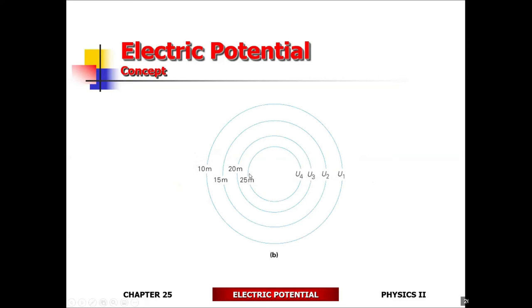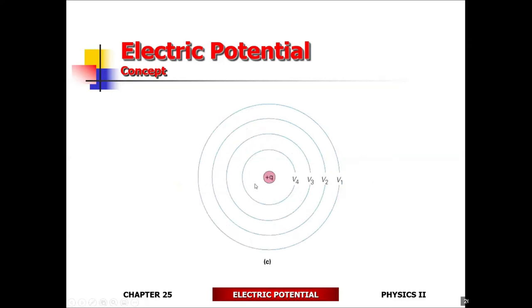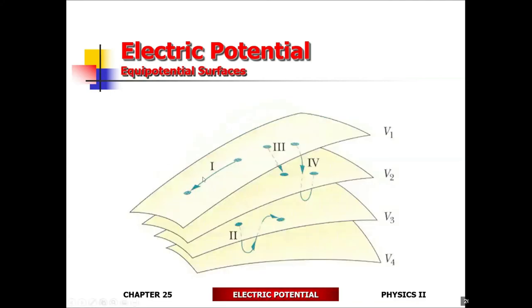So U4 represents an equipotential surface, U3, U2, and U1. This is the electrostatic analogy — each and every single ring that you're looking at is going to be at the same voltage or potential for a point charge. These are equipotential surfaces. V1 is potential surface 1 — every single point is going to be at the same potential. V2 is the second equipotential surface.